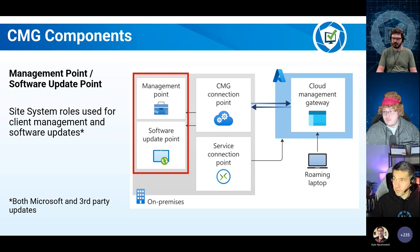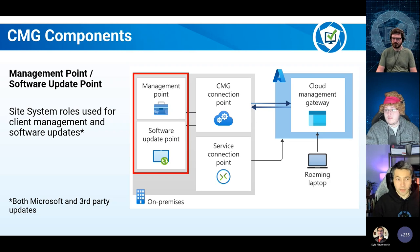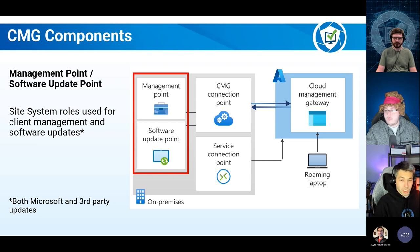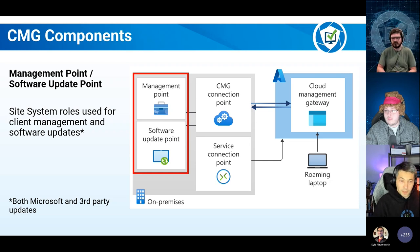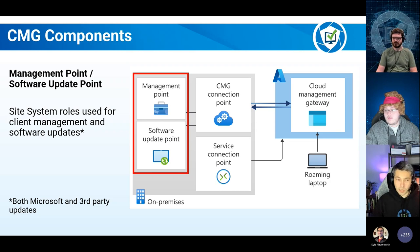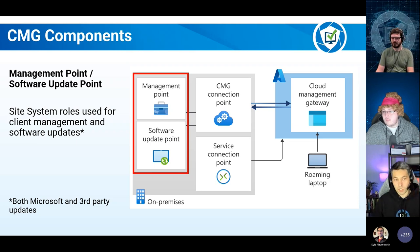The software update point is what your clients connect to — typically on an on-premise network — to download Microsoft updates and third-party updates. When your clients are coming through a CMG, there isn't a requirement for you to distribute Microsoft update content to your CMG. When clients are scanning against the CMG, they'll pull that content across the CDN from Microsoft updates. Not quite the same story for third-party updates — one of the gotchas we see is people not distributing the content to their cloud management gateway.